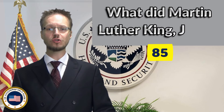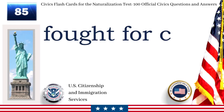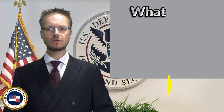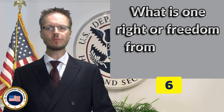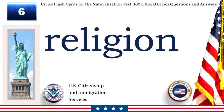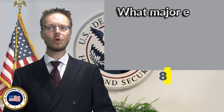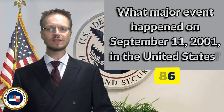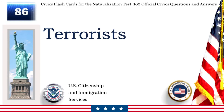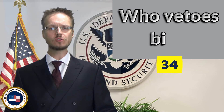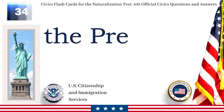What did Martin Luther King Jr. do? Fought for civil rights. What is one right or freedom from the First Amendment? Religion. What major event happened on September 11, 2001 in the United States? Terrorists attacked the United States. Who vetoes bills? The President.